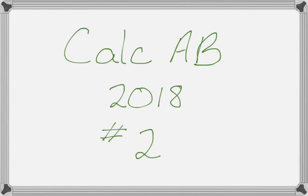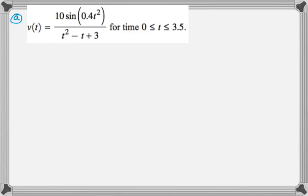Okay, in this video we're going to talk about number two from the 2018 Calc AB exam, and it's kind of just a particle motion problem, nothing really too exciting. So let's see. We are told that a particle is moving along the x-axis, its velocity is given by this thing, and t is between 0 and 3.5. There are no units given in this problem, so you pretty much don't use units in your answers, which is kind of weird.